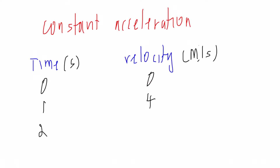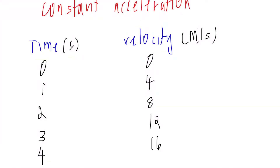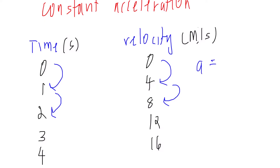The velocity is given in meters per second. At 1 second, the velocity is 4 meters per second. At 2 seconds, the velocity is 8 meters per second. At 3 seconds, the velocity is 12 meters per second. At 4 seconds, the velocity is 16 meters per second. The change in velocity each second is 4 meters per second — so the acceleration is constant.